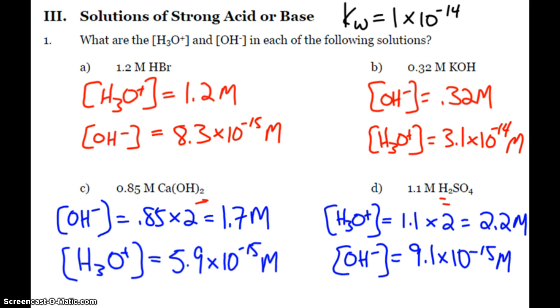So try and figure those out and then check your answers. So for letter B, strong base. So my concentration of hydroxide is 0.32 molar. And then, when I divide my ion product constant by that, I get hydronium 3.1 times 10 to the negative 14. And again, C and D, calcium hydroxide, strong base. But I have to multiply the solution concentration by 2 because of the two hydroxides. That's how I got that answer.